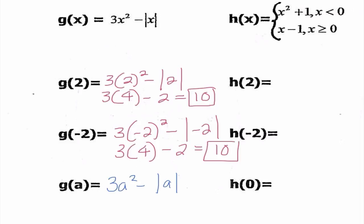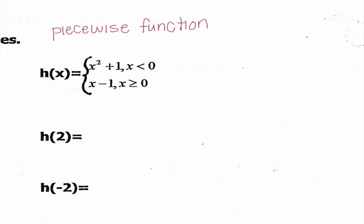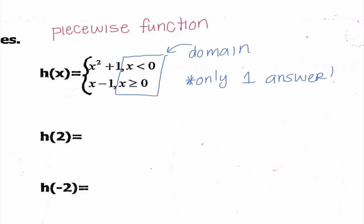Moving on to h, we're going to see something a little bit different. What looks strange about h(x) is that it appears like we have two different equations. However, we only have one equal sign, so we only have one equation — it's just given a very specific name. We call this a piecewise function. The conditions x < 0 and x ≥ 0 are talking about the domain. If x is less than 0, I substitute into the first expression; if x is greater than or equal to 0, I substitute into the second expression. This is a function, so for any input I only have one output.